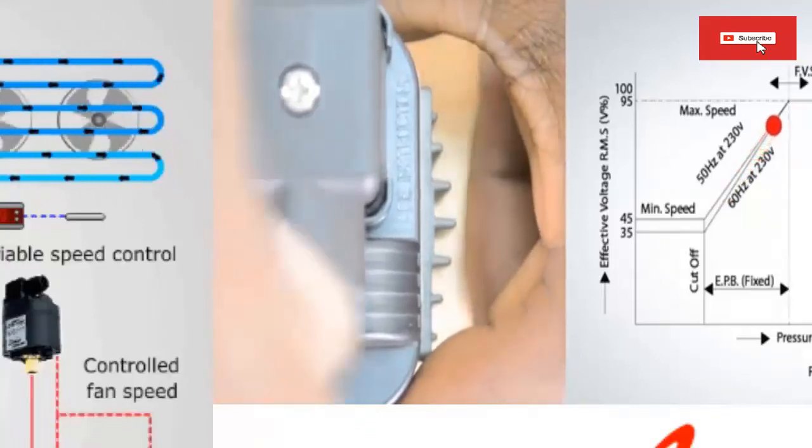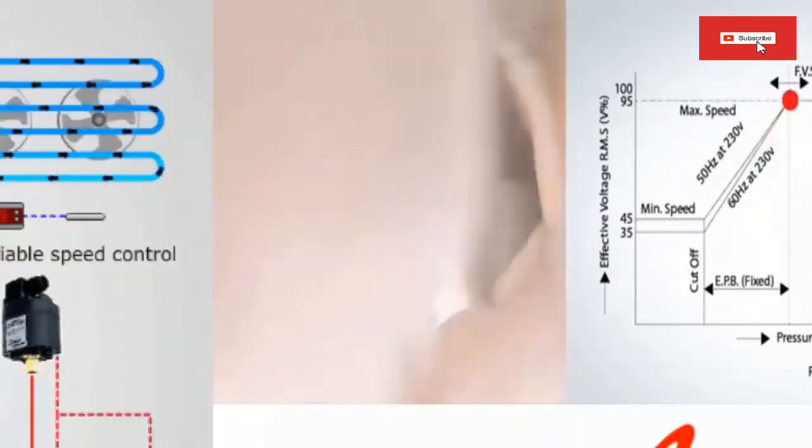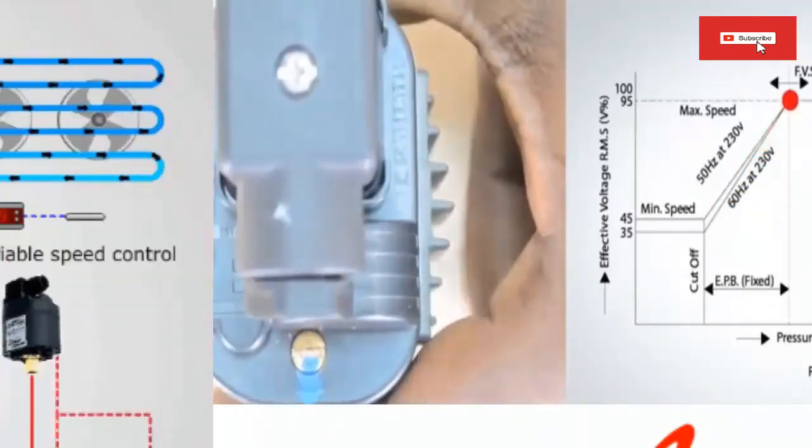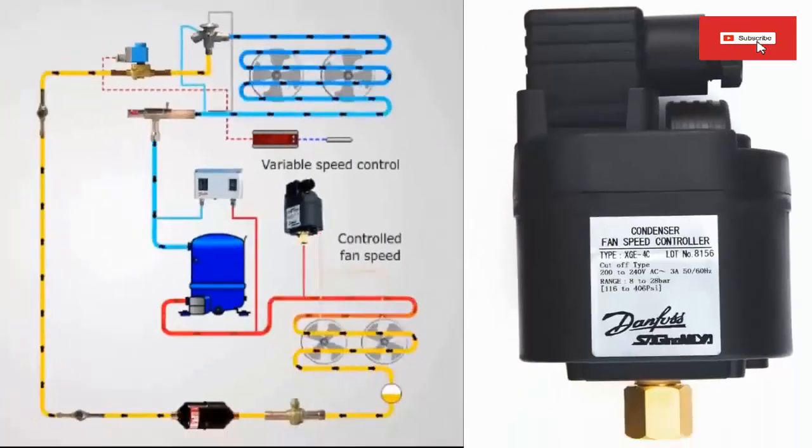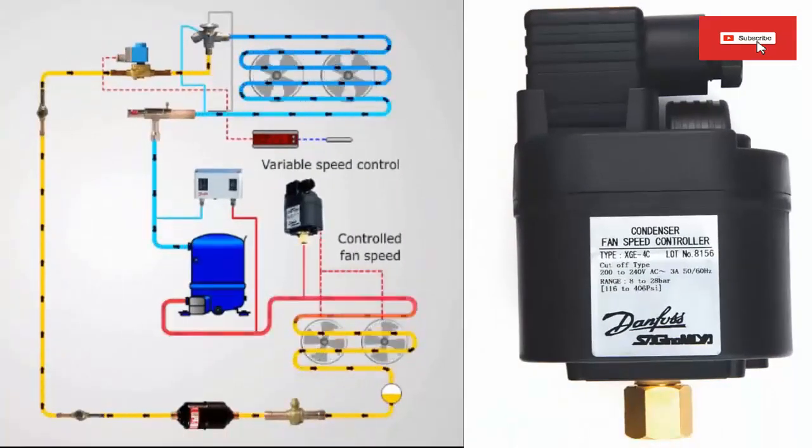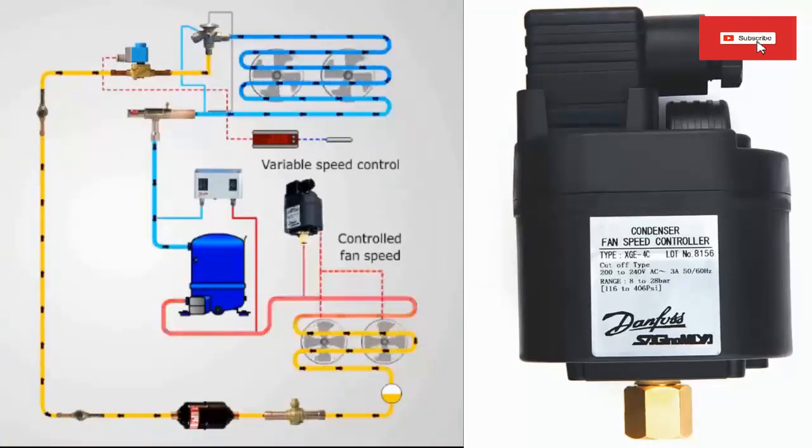What are the types of variable speed control? There are two main types of VSC: 1. Pressure Actuated Controllers and 2. Electronic Controllers.